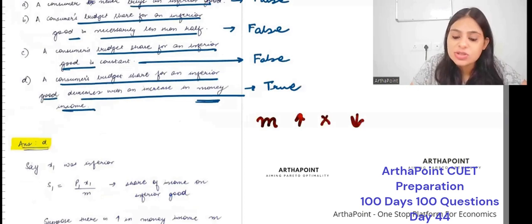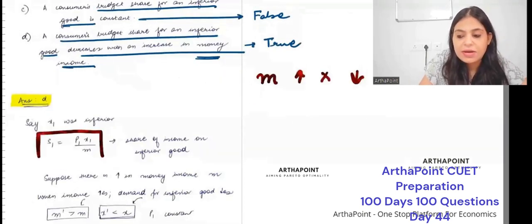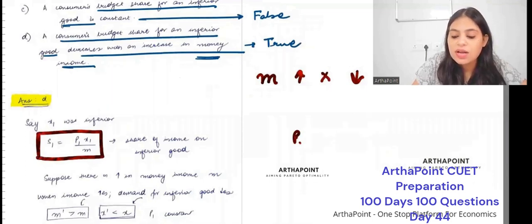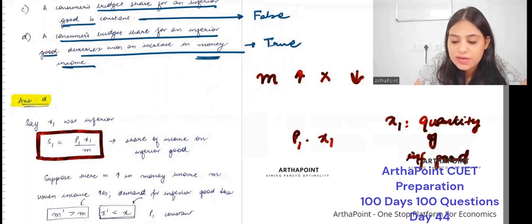How do you represent share of inferior good? Share is given by the expenditure divided by income. So it is P1X1, where X1 is the quantity of inferior good. So P1X1 divided by income.